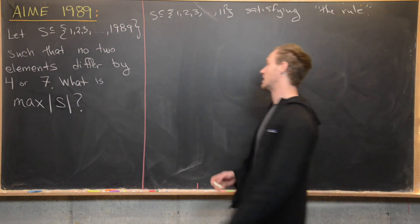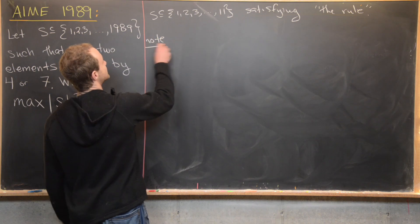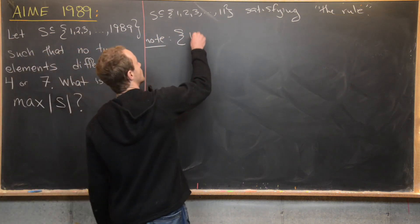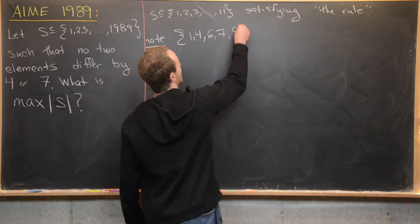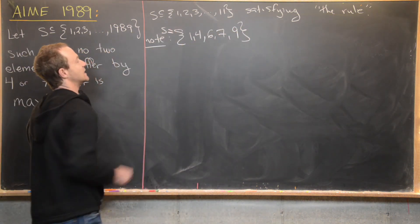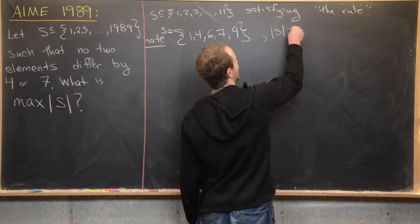It's a little bit trickier, but if you try hard enough, you can find a five element set. So let's notice that the following set satisfies the condition and it has five elements. So 1, 4, 6, 7, 9 has five elements and it satisfies this rule. So maybe we could set S equal to this and then point out that S has five elements.